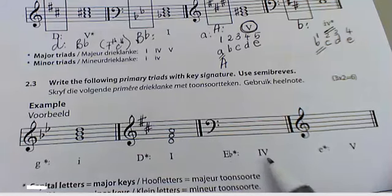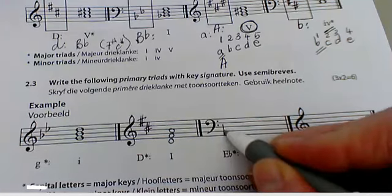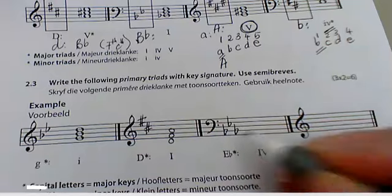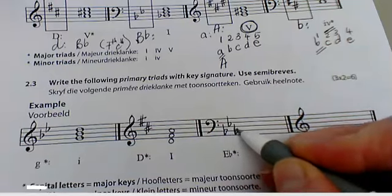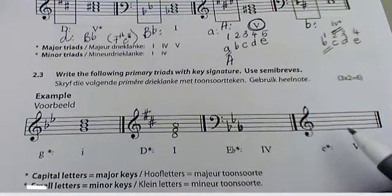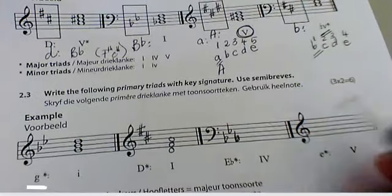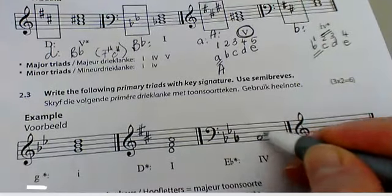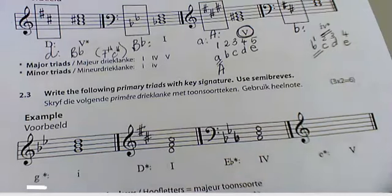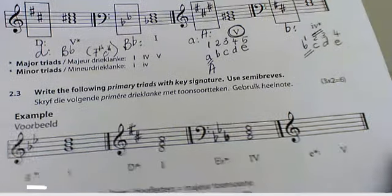E-flat, four. E-flat — write your key signature: Battle, Ends, And. And four: E, F, G, A. I start on A — one, three, five. I don't have to add anything.